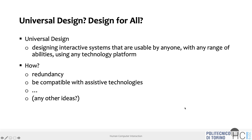One way to move toward universal design is redundancy of information across modalities. For example, providing information both visually and vocally — the same important information delivered at the right time in both ways. If I can listen, I get it through audio; if I can see, I get it visually. The application should support redundancy through different means, such as visual and speech for notifications.